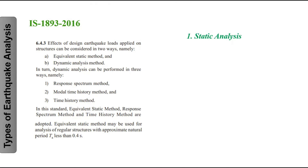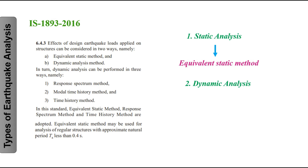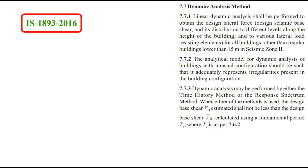Let's look into the types of earthquake analysis. As per IS 1893-2016, we have two types of analysis methods. First is static analysis, and then we have dynamic analysis. In static analysis, we have the equivalent static method. In dynamic analysis, we have the response spectrum method and the time history method. These two are the main types of earthquake analysis used in building design.